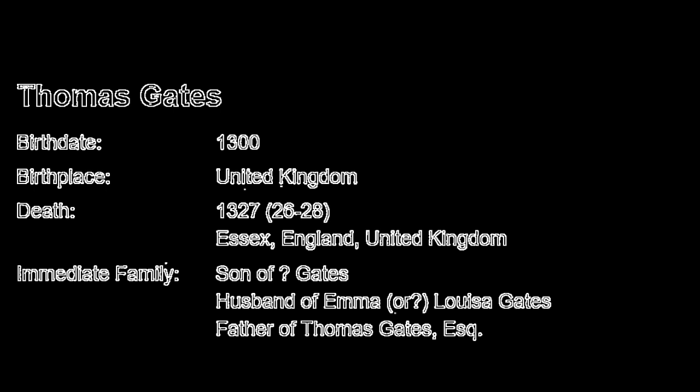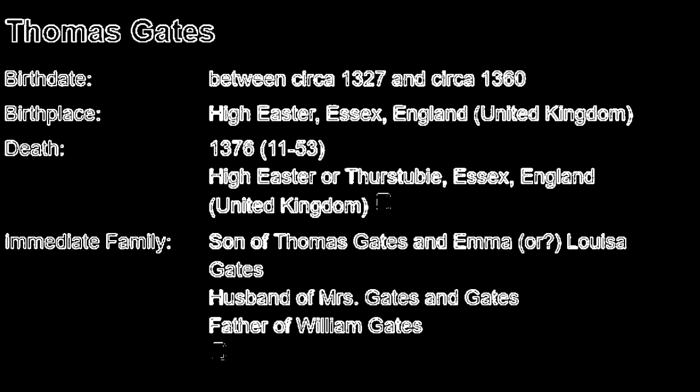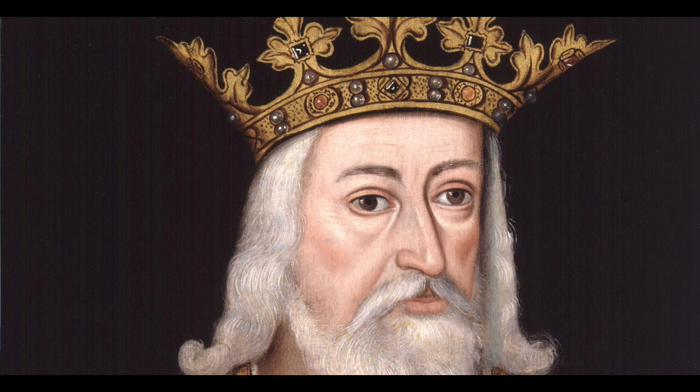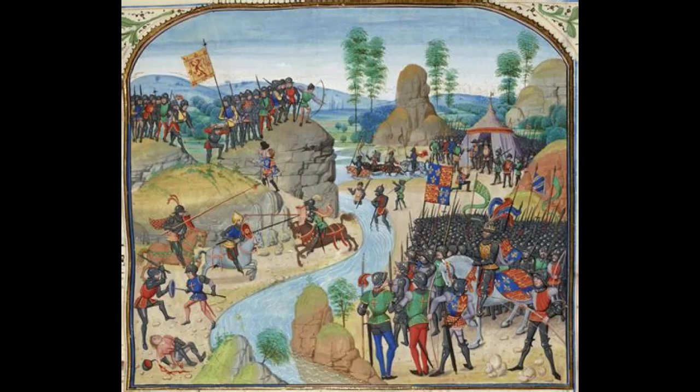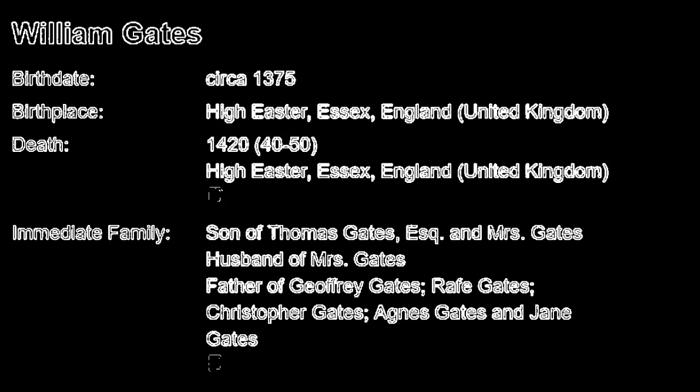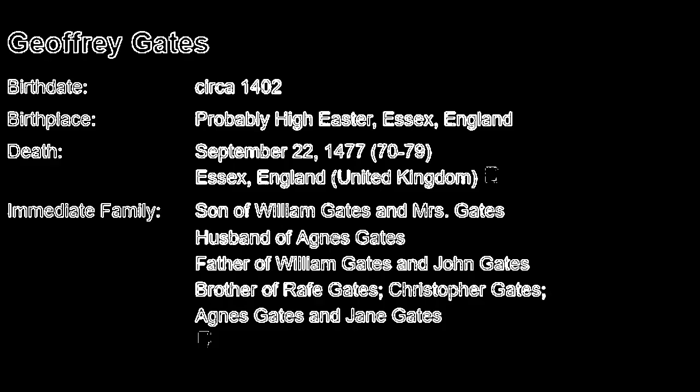We begin the story of Bill Gates' ancestry at the turn of the century in the year 1300 AD. Thomas Gates was born in Essex, and he is as far back in the Gates family tree as I can trace. Thomas would also name his son Thomas, who was born in High Easter, Essex, in 1325, but he would barely get a chance to know his heir. Thomas Gates Sr. would die two years after the birth of his son in 1327 — the same year in which the newly crowned King Edward III would lose against the Scottish in the Battle of Stanhope. There is little evidence of what ended the life of Thomas Gates, but these were turbulent times. The young Thomas Gates would father the first recorded William Gates of the family, William F. Gates, born around 1375.